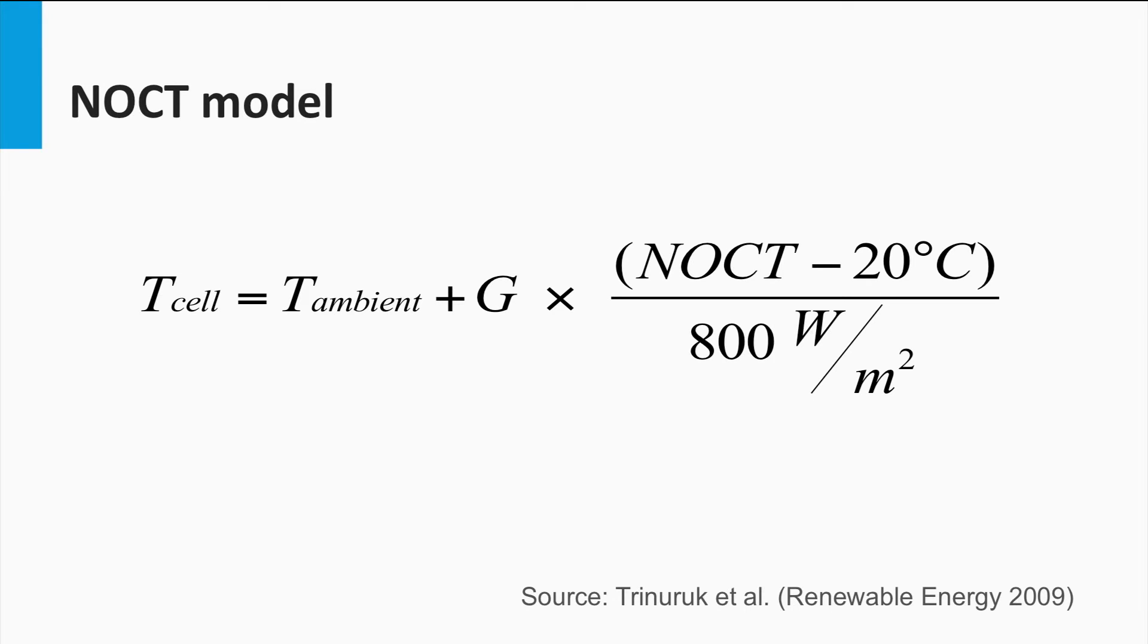As can be seen from this equation, the cell temperature is not only a function of the ambient temperature, but also of the irradiance. This makes things interesting. Because if we consider the irradiance and temperature changes over a calendar year, we would see an effect of both irradiance and temperature across the seasons.